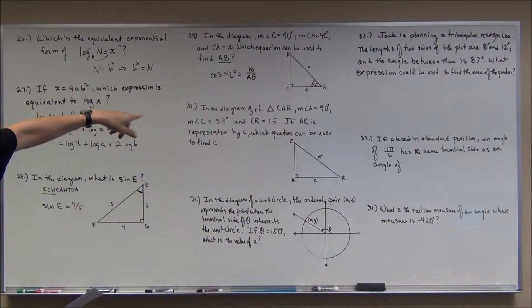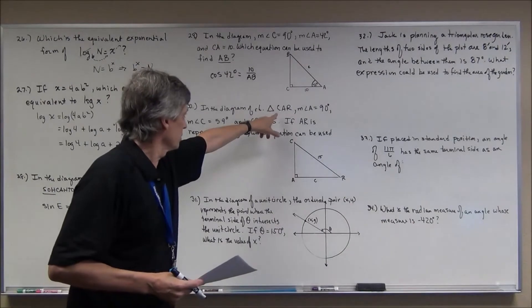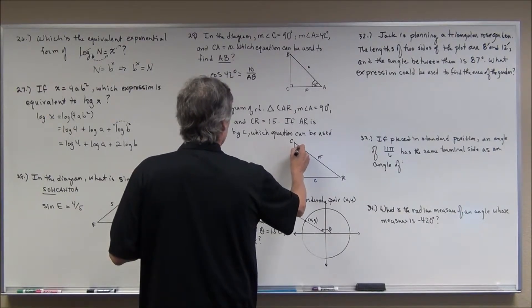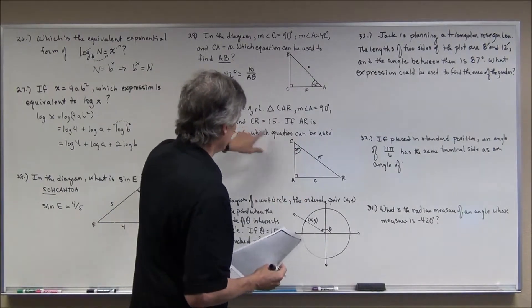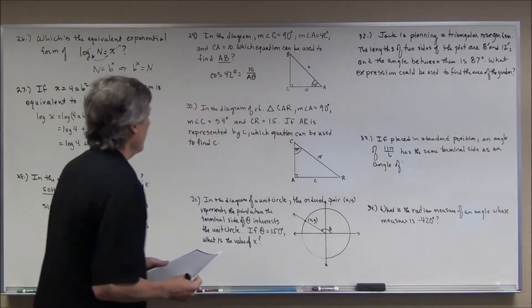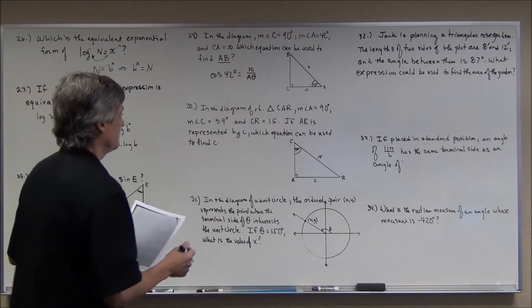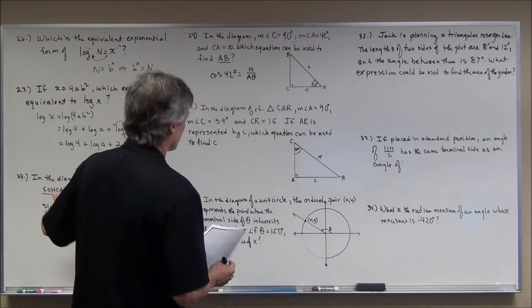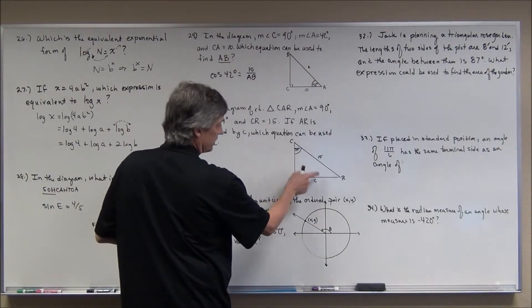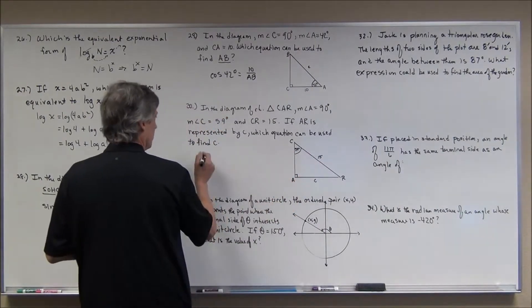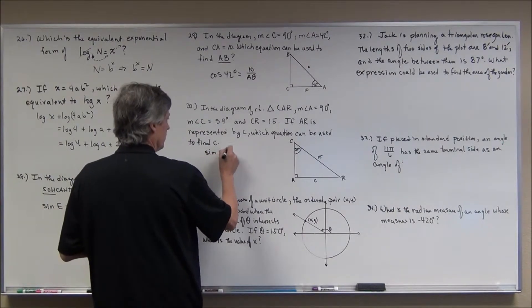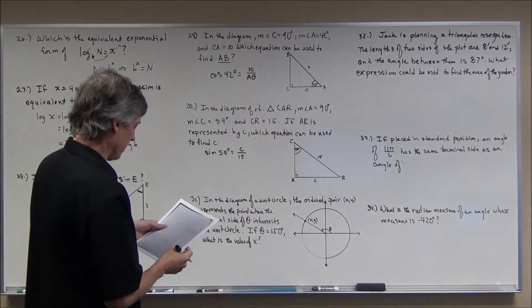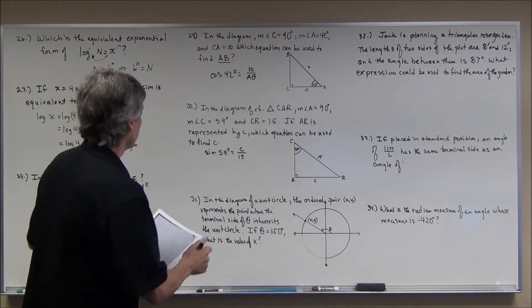All right, the next guy up, it says in this another right triangle, triangle C-A-R, measure of angle A is 90, measure of angle C, that's up here, is 59 degrees. Better mark that. And C-R, which is the hypotenuse, is 15. If A-R is represented by c, so that's this segment here, which equation can be used to find c? Well, again, this is a right triangle. You're going to use SOHCAHTOA. And with respect to this angle, this is the opposite. This is the hypotenuse. You're going to use sine. So I would say that the sine of 59 degrees is equal to c over 15. Now, they might have that. They might have multiplied it out. No, they have that, and it's answer A. They were just like this.